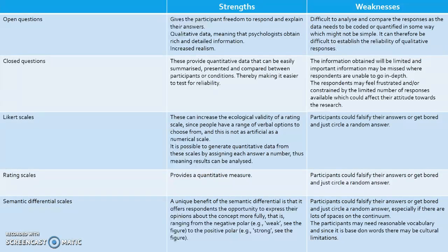The strengths of Likert scales are that these can increase the ecological validity of a rating scale, since people have a range of verbal options to choose from, and this is not as artificial as a numerical scale. It is possible to generate quantitative data from these scales by assigning each answer a number, thus meaning the results can be analysed and compared. However, participants could falsify their answers or get bored and just circle a random answer, and this applies to most of these scales.